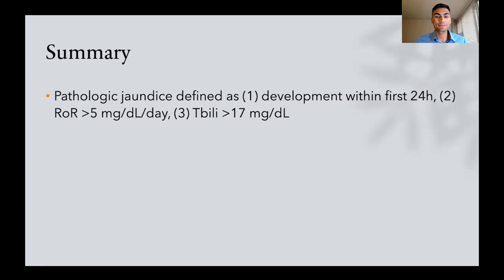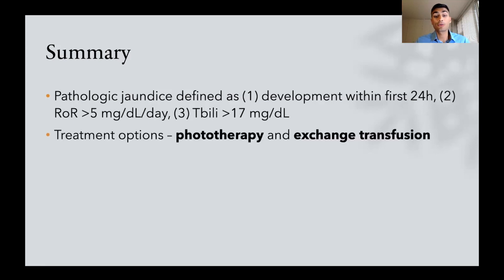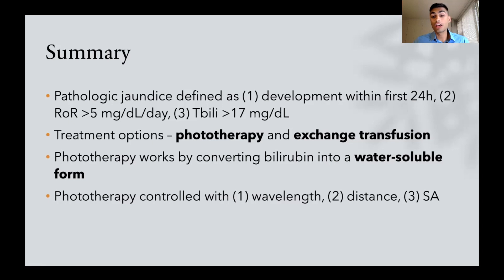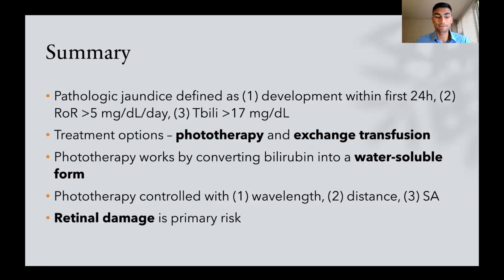Let's summarize what we learned today. Pathologic jaundice is defined as: one, if it develops within the first 24 hours of life; two, if the rate of rise is more than five milligrams per deciliter per day; and three, if the total serum bilirubin is over 17. We learned about treatment options including phototherapy and exchange transfusion. Phototherapy works by converting bilirubin into a water-soluble form through photoisomerization. Phototherapy is controlled by the wavelength of light, the distance between the light and the baby, the number of lights, and the total surface area exposed. Retinal damage is the primary risk associated with phototherapy.